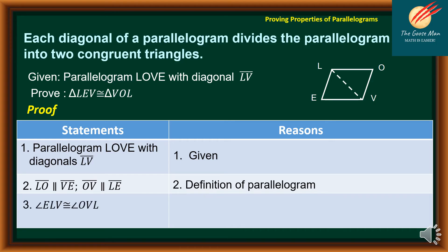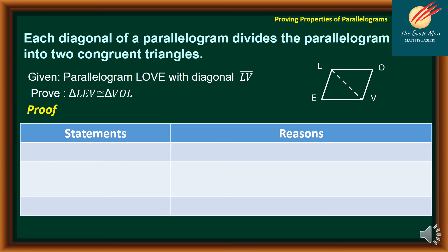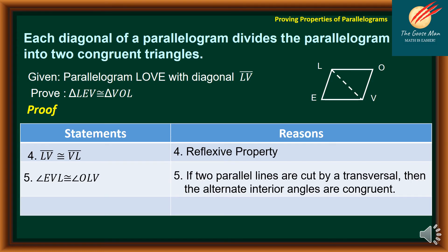For number three, angle ELB is congruent to angle OBL — because if two parallel lines are cut by a transversal, then the alternate interior angles are congruent. For statement number four, line segment LB is congruent to line segment BL — reflexive property. For statement number five, angle EBL is congruent to angle OLB — alternate interior angles congruent. And finally, triangle LEB is congruent to triangle BOL — the reason is the ASA congruence postulate.